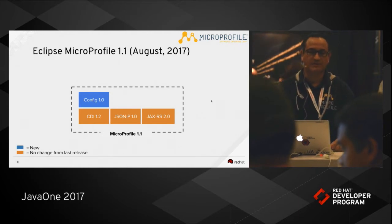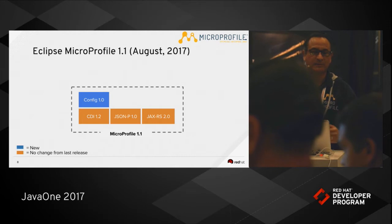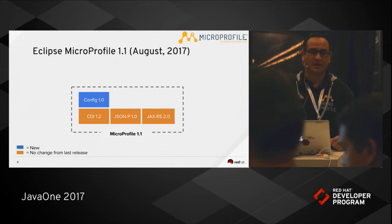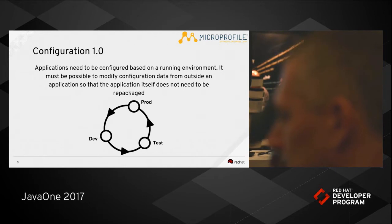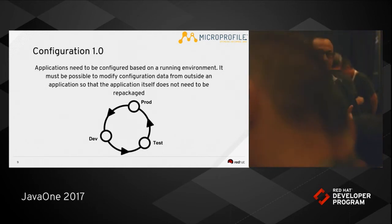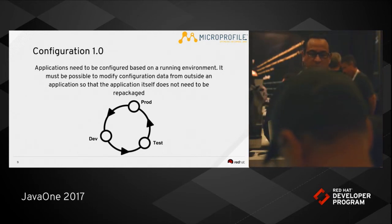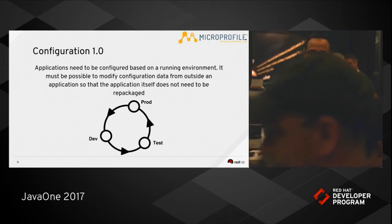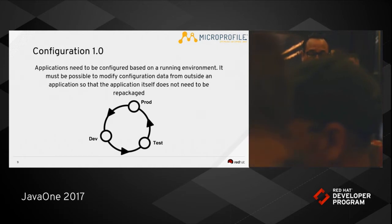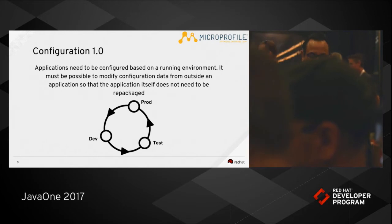Eclipse MicroProfile 1.1 came out in August of 2017. It includes a non-Java EE API called Config 1.0. What Config attempts to solve is: as you move applications and microservices through different environments — for example, from dev to test to production — each environment will have its own configuration information. This has been a challenge historically in application development in general, so Configuration 1.0 attempts to address this problem.